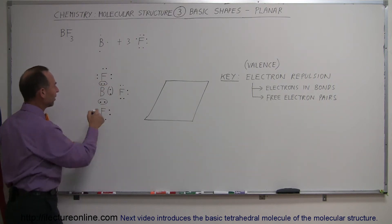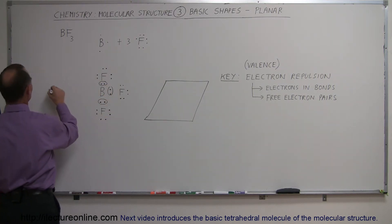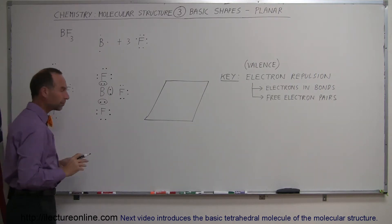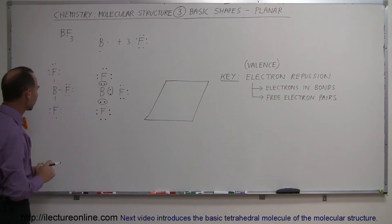Actually the Lewis structure instead of writing it like that we would probably write it like this with a single line indicating the bond. I'm sure not the double bond but the bond with the two electrons. That's not a double bond that's a single bond. Okay and then we have the three fluorines here and the third one there.